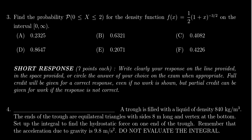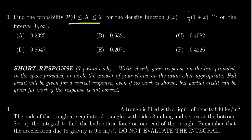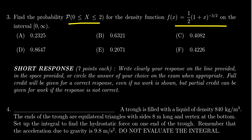We have to compute the probability as our random variable x varies between 0 and 2, given the probability density function f(x) = (1/2)(1+x)^(-3/2), defined on the interval 0 to infinity.